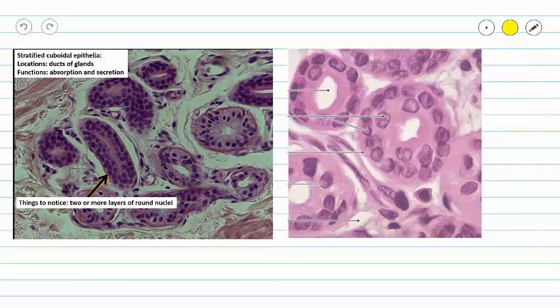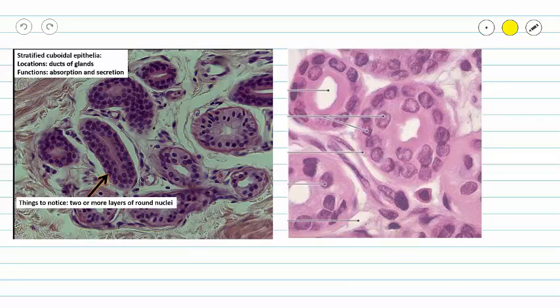And finally, one more example of a stratified cuboidal epithelium. Again, this one does have that nice round shape to the entire thing, but you can see that we have multiple layers of cells between the basal layer of the epithelium and the apical layer of the epithelium.